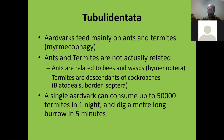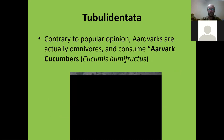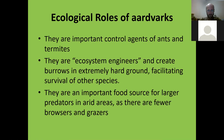Contrary to popular opinion, aardvarks are actually omnivores and consume aardvark cucumbers — cucumbers that grow below the ground. Aardvarks dig them up, crush them, and defecate out the seeds, which then grow in the aardvark's feces. The plant is completely reliant on aardvarks — it's also known as the aardvark pumpkin, a form of cucumber that grows in a subterranean condition.